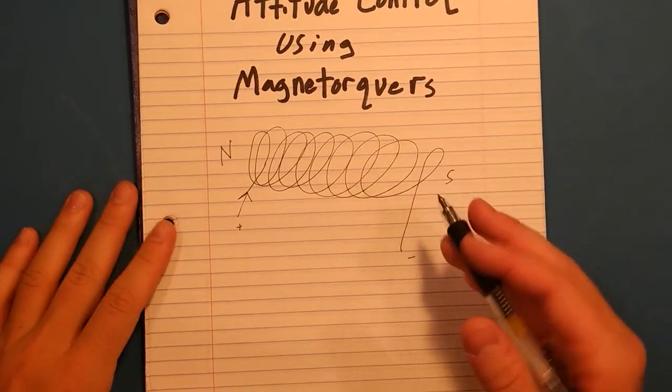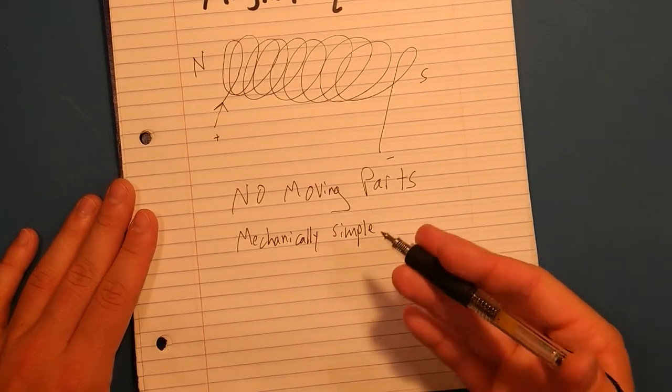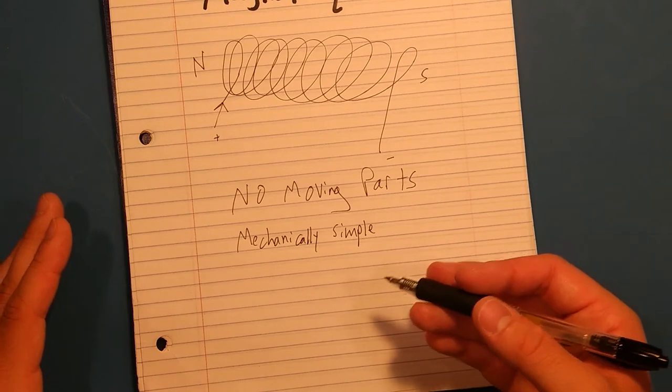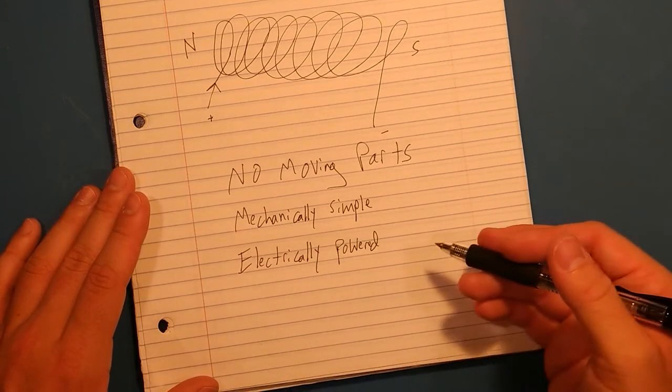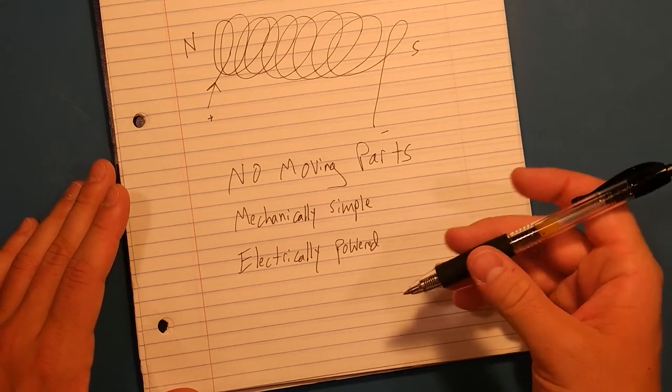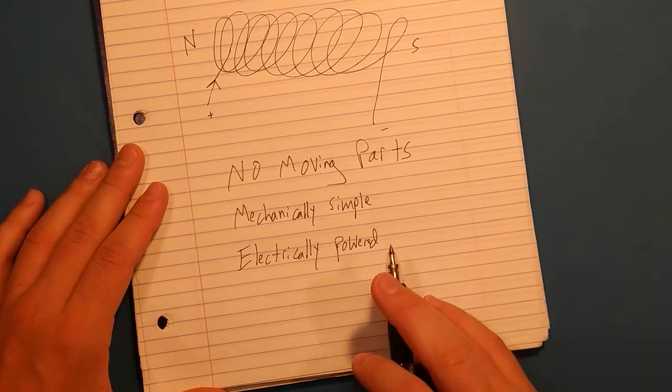And there's a lot of great things about these. There are no moving parts. They are mechanically simple, in part because there are no moving parts, and it's just a coil of wire wrapped around something. Electrically powered, and since you're generating energy from the nearly infinite resource of the Sun, these magnetorquers have, essentially, an unlimited lifespan.